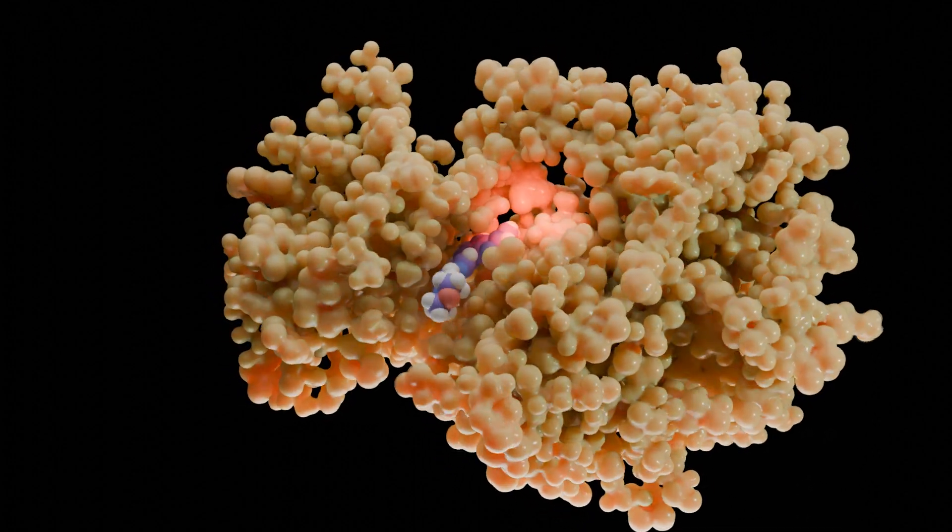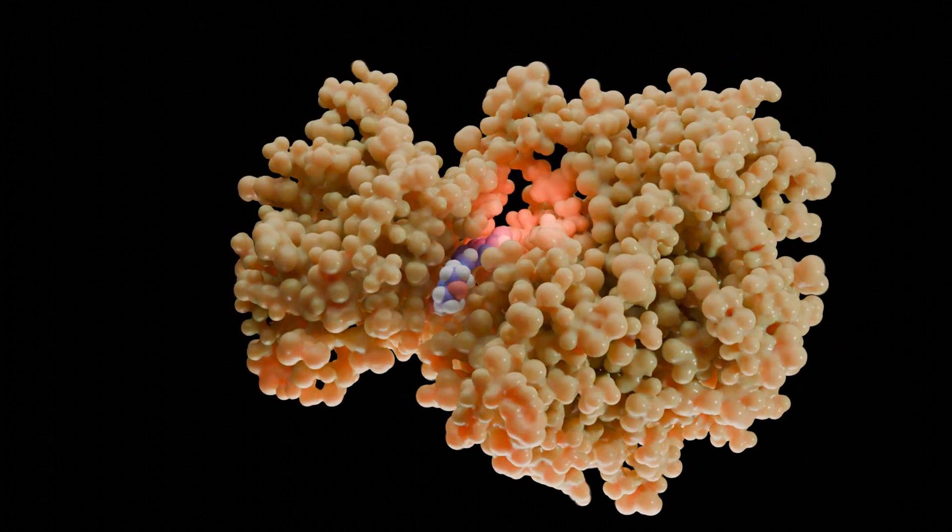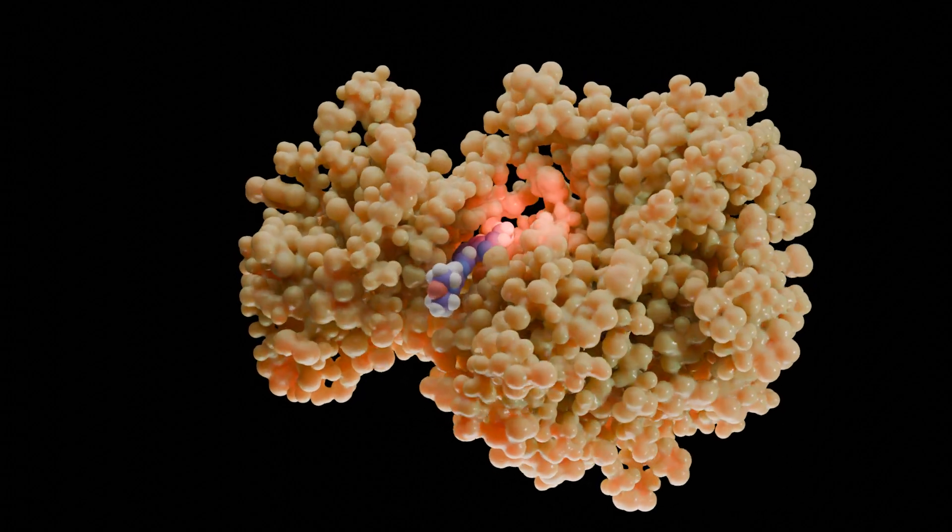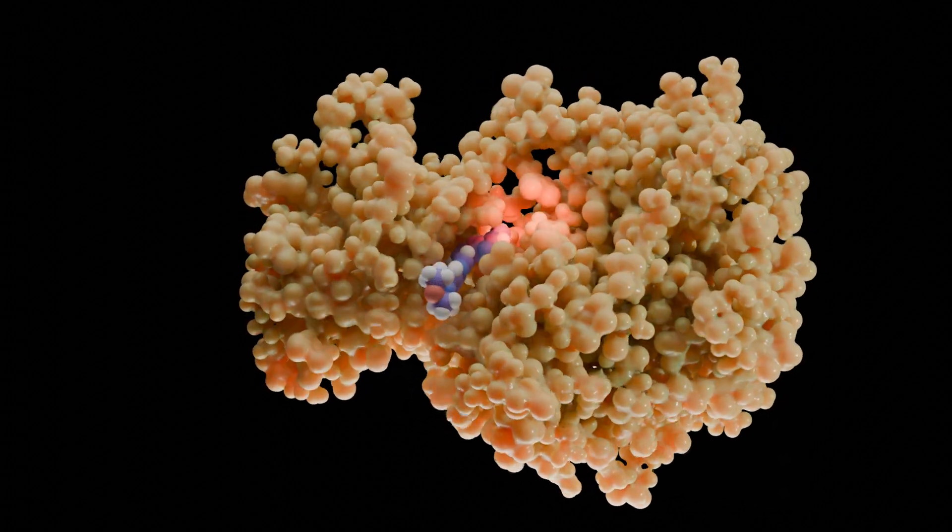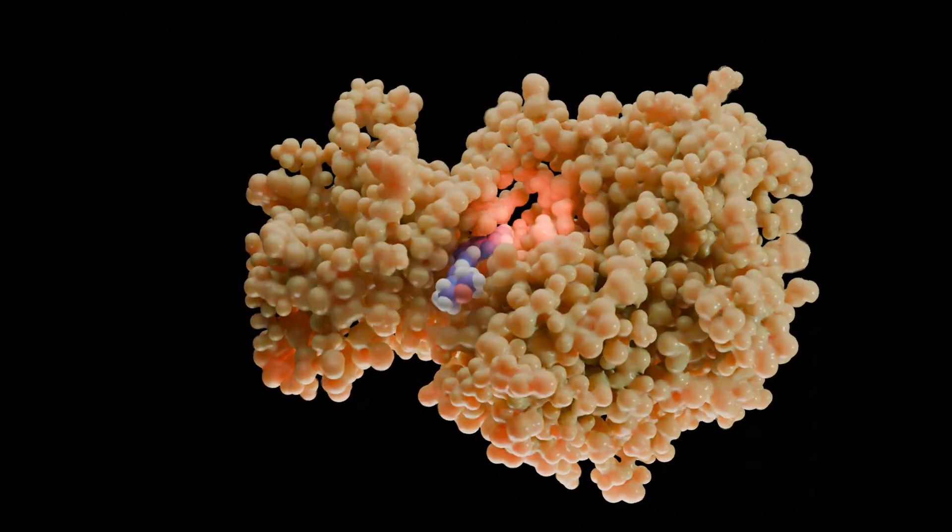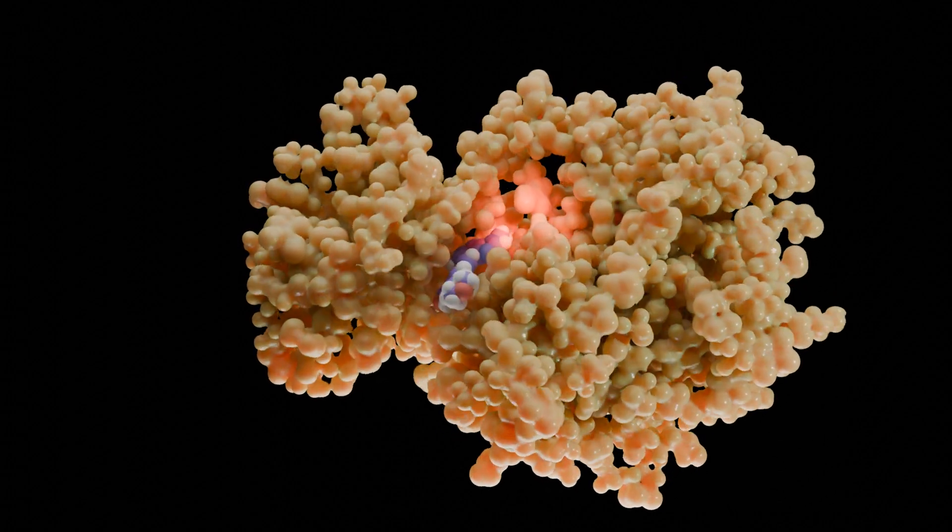So what's the deal with HPK1? Think of it like an internal brake pedal in immune cells. Specifically, HPK1 acts in T cells, the soldiers of the immune system. When a T cell recognizes a threat, say a cancer cell, HPK1 sends a slow-down signal. It's the cell's way of saying, whoa there, not so fast. Normally, that's good. You don't want your immune system overreacting to everything.